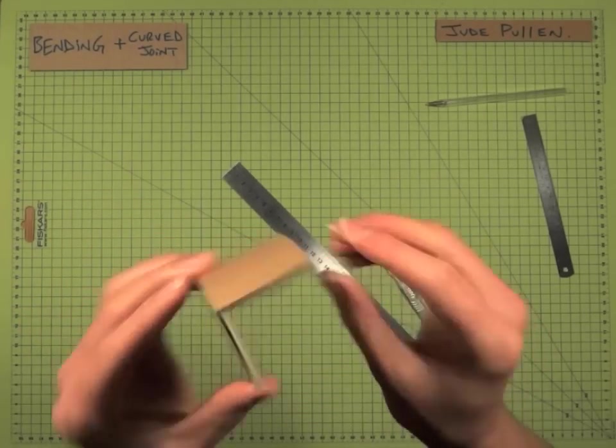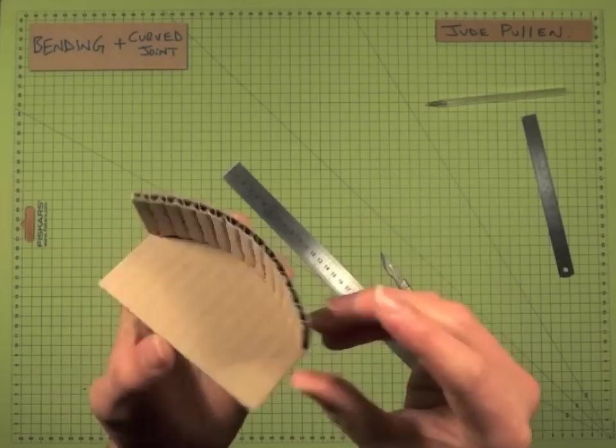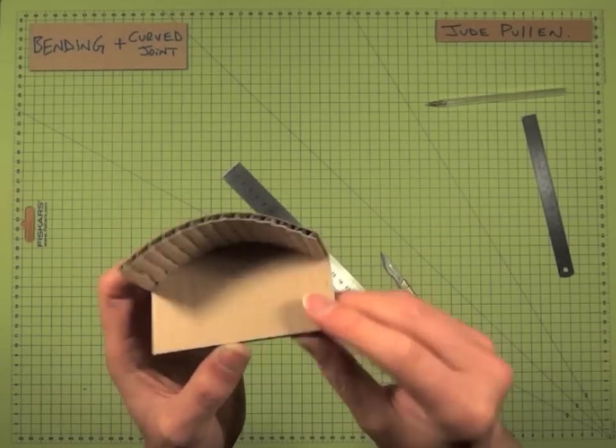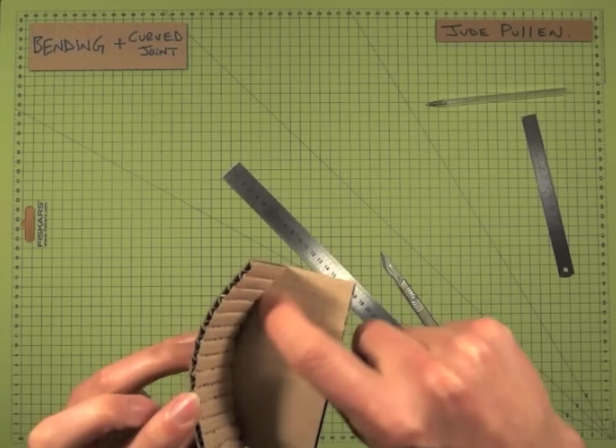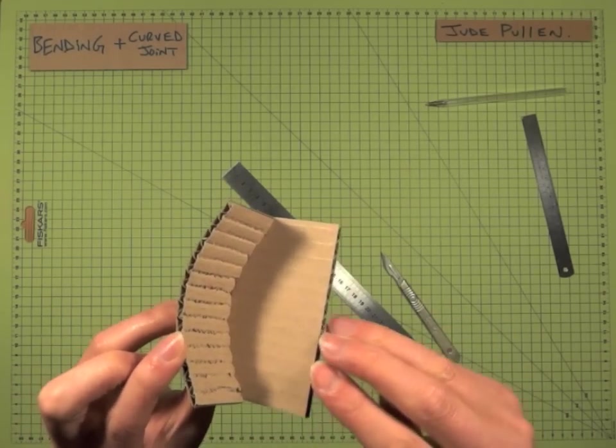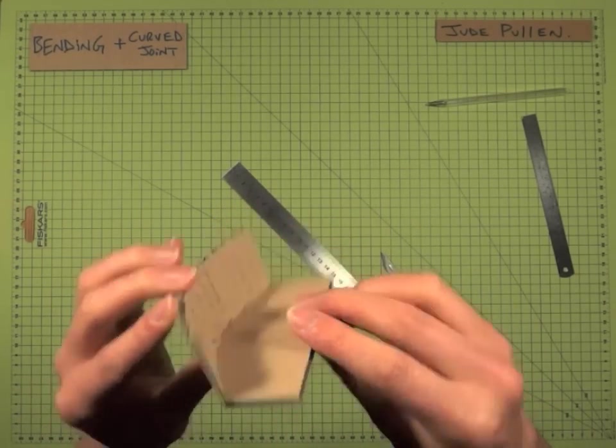And depending how precise you want to be, you can of course trim up these edges to make sure that they're as flush as you like. But if you're unsure about the strength of the bond, you can even put a little more glue in that valley there.